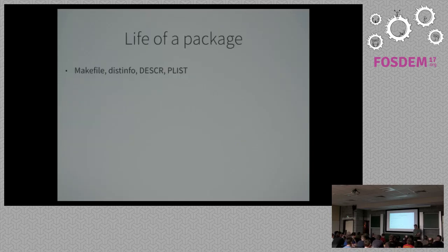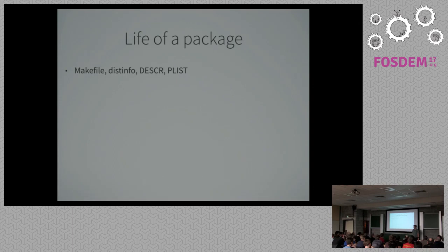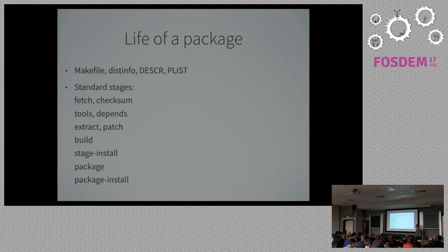A package in pkgsrc minimally needs four files: a Makefile, distinfo, description (DESCR), and the plist — the packing list. The Makefile is essentially a bunch of variable declarations with one include line at the end that does all the work. The distinfo is automatically generated and contains checksums for the downloaded file. The description is one or two paragraphs you need to write. The packing list is auto-generated by the infrastructure.